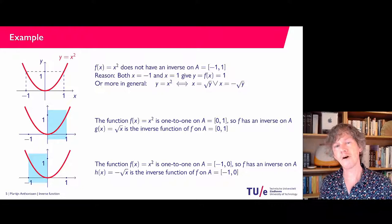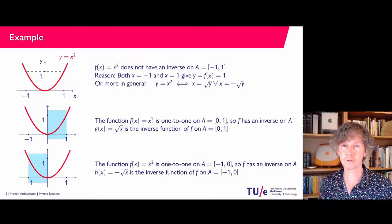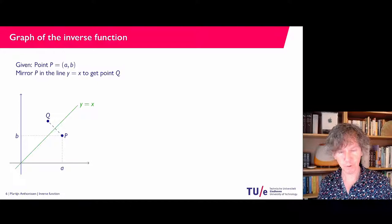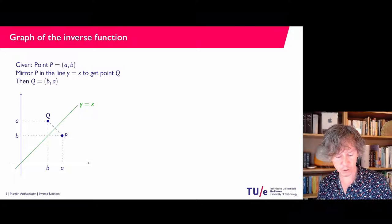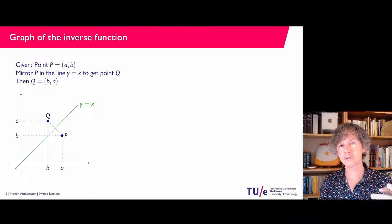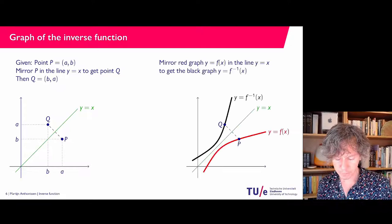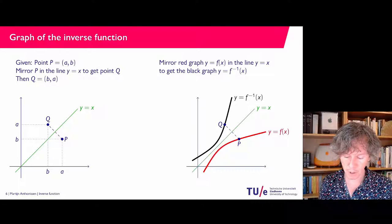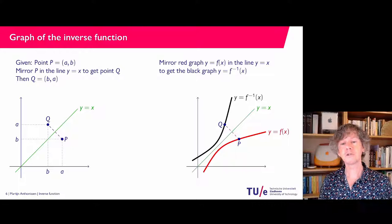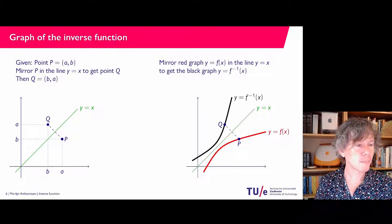You may wonder: if I have the graph of a function, can I easily find the graph of the inverse? The answer is yes. In general, if you have a point P with coordinates (a, b), and you mirror that point in the line y equals x, you get a point Q with coordinates (b, a) — basically you swap the x and y axes. Now assume we have the graph of a function y equals f(x), which is increasing and hence one-to-one. If I take a point P on the graph and mirror it into the line y equals x, then that mirrored point Q is on the graph of F inverse of x.